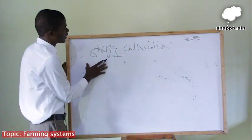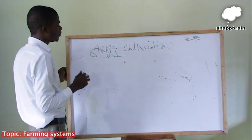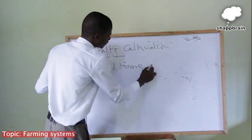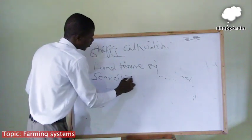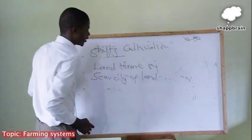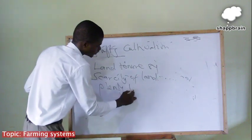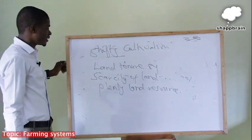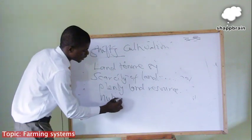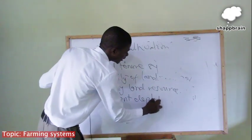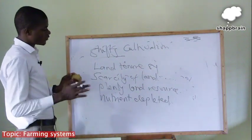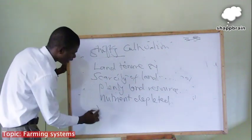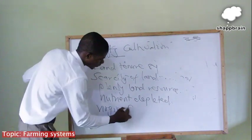It is worthy of mentioning that this system of farming doesn't take place nowadays because of land tenure systems or simply because of the scarcity of land. In the early days, however, there were plenty of land resources. So farmers could farm on a particular piece of land and when they realized that the nutrients available in that soil had depleted, they would leave it, move along with their family to a different settlement and farm afresh. This system of farming has a disadvantage of destroying the virgin forest or the vegetation.